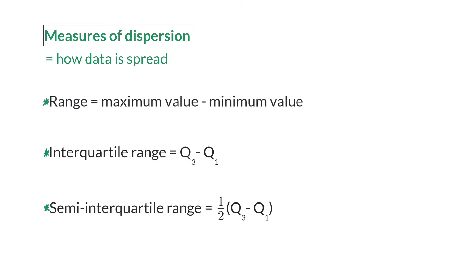The measures of dispersion are calculated using only two values out of a full set of data values. That is why in grade 11 we are going to look at new measures that take all the values in a data set into account. Next we are going to look at two examples where we calculate these six measures.